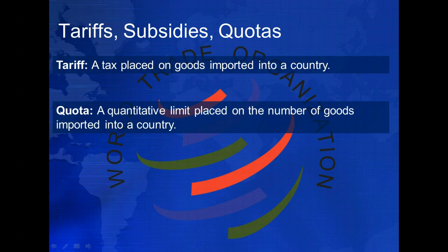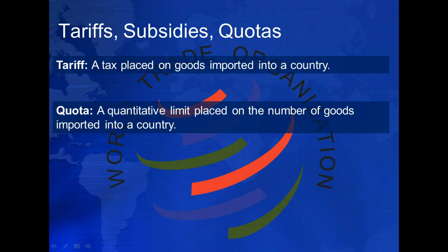Quotas are numerical or quantitative restrictions on the amount of goods imported into a country. Most textiles are subject to quotas, meaning that the United States government sets a finite number of very specific clothing items — for example, men's white, no-logo, pocketed t-shirts with crew necks — that can be imported from a specific country. Once the quota is reached, no further imports of items meeting that description from that country are accepted in a year.